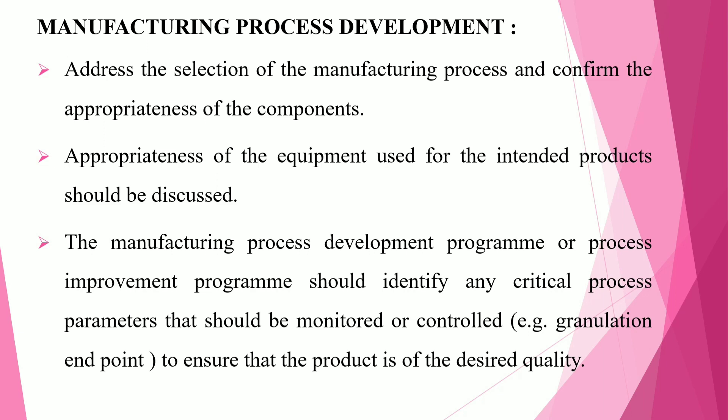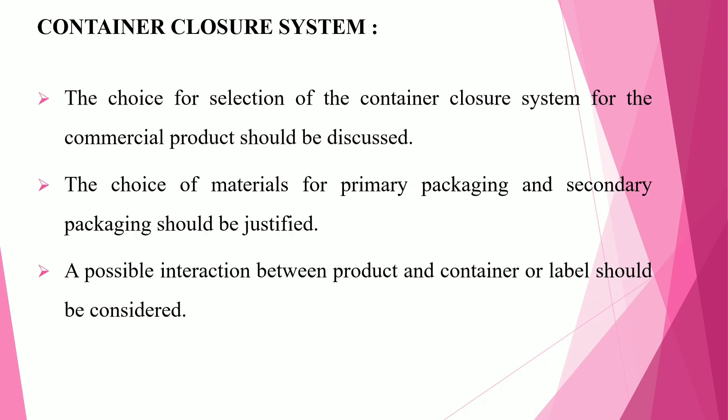The next topic is manufacturing process development. This addresses the selection of the manufacturing process and confirms the appropriateness of the components. The appropriateness of the equipment used for the intended product should be discussed, including which manufacturing processes are going to be used. The manufacturing process development or process improvement program should identify any critical process parameters that need to be monitored and controlled during manufacturing, such as the granulation end point, to ensure the product is of desired quality.